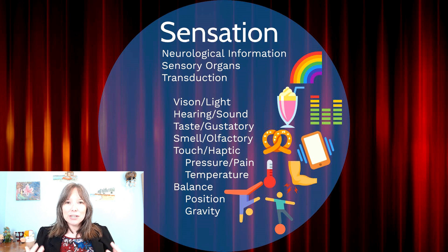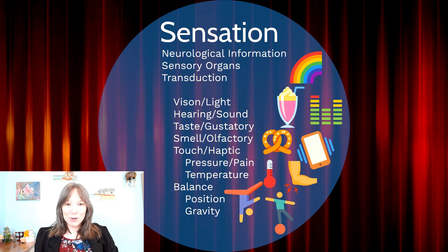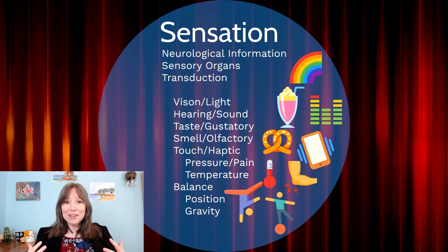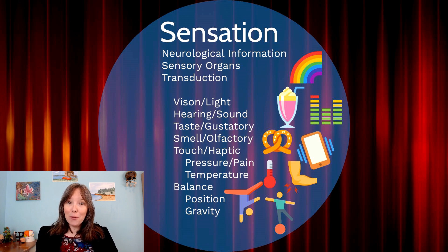Transduction is the idea that our sensory organs — such as our eyes, our ears, our taste buds — are taking information from the environment and transforming it into neural impulses that our brain can interpret. That is neurological information taken in through our sensory organs in our peripheral nervous system.